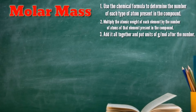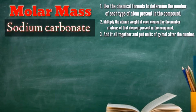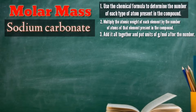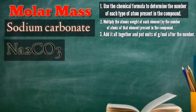Find the molar mass of sodium carbonate. First, use the chemical formula to determine the number of each type of atom present in the compound. For sodium carbonate, we have Na₂CO₃.